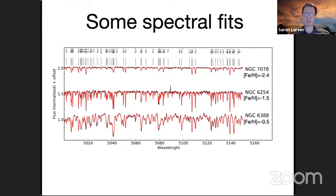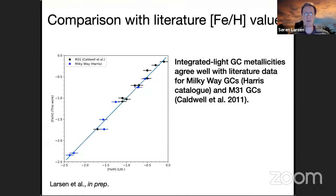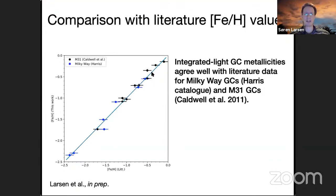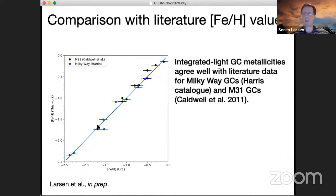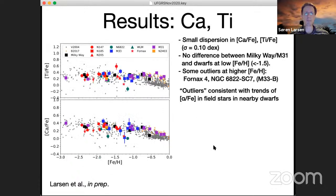If we plot our metallicities versus literature metallicities as a check: the blue symbols are Milky Way globular cluster metallicities from Bill Harris's compilation, and the black symbols are M31 globular cluster metallicities calibrated onto the Milky Way abundance scale. We get quite good agreement — no systematic offsets between the metallicities we derive from high-dispersion spectroscopy and those available in the literature from other methods, either individual stars or lower-dispersion spectroscopy. That's quite reassuring.